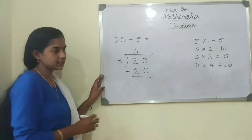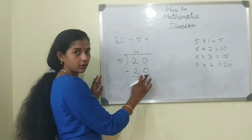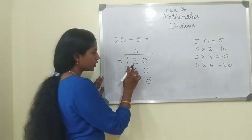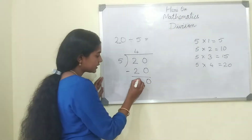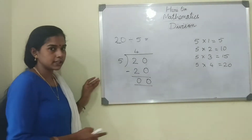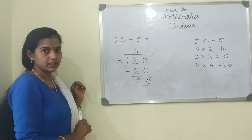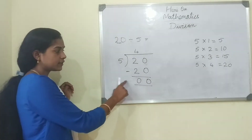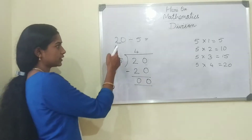We are going to subtract these numbers. So 0 minus 0 is 0, and 2 minus 2 is 0. Understood children? This is the long method — division by long method.